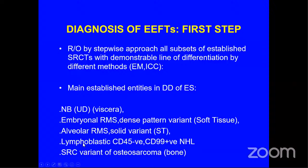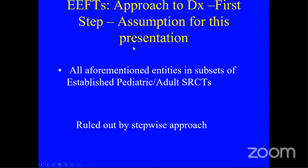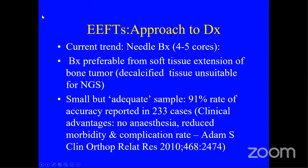Main established entities to consider in the differential diagnosis of Ewing sarcoma include neuroblastoma, embryonal rhabdomyosarcoma showing dense pattern, alveolar rhabdomyosarcoma showing solid pattern, lymphoblastic non-Hodgkin lymphoma of bone which is CD45 negative and CD99 positive, and the small round cell variant of osteosarcoma. For this presentation, I assume that all aforementioned entities in the established pediatric small round cell tumor subsets have been ruled out by stepwise approach, leaving only the five EFTs for differential diagnosis.